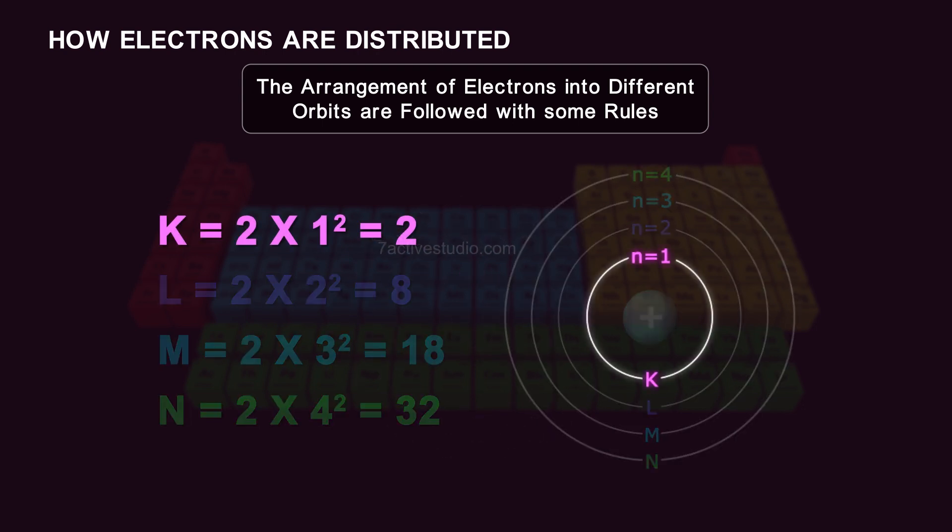The first orbit 1 or K shell can accommodate 2 electrons as per 2n square. 2 multiplies 1 square is equal to 2.